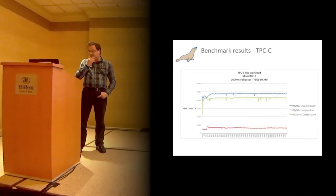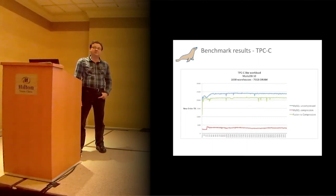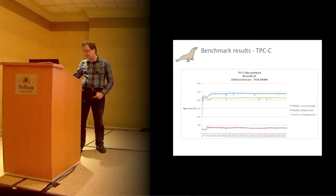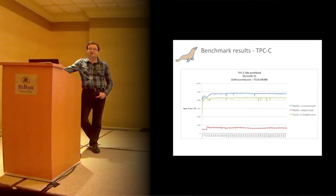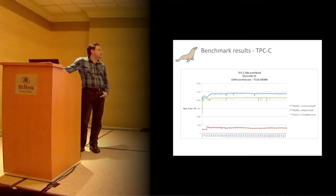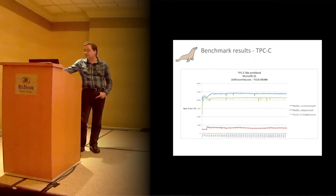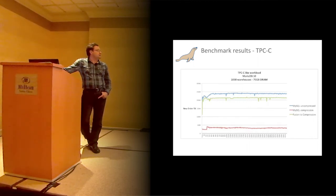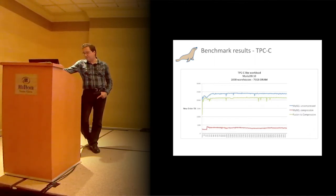Alright, benchmarks. TPC-C is quite a heavy load with a lot of writes. That red line there is, at the moment, the InnoDB compressor. As you can see, it's below 5,000 new-order transactions per second — quite stable there. Uncompressed, this blue line, is around almost 25,000 transactions per second. There are some dips there because the buffer pool flushes happen. And the green one is page compression — so we can compress data with about a 15% performance penalty in this case.